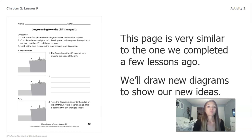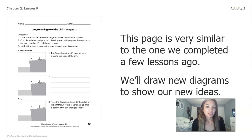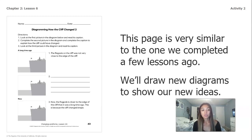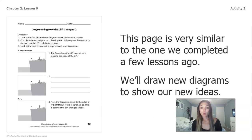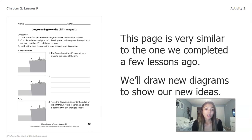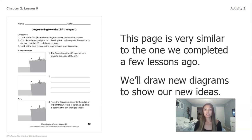The first part of our diagram shows that a long time ago, the flagpole on the cliff was not very close to the edge of the cliff. Then, somewhere in between a long time ago and now, something happened — and you're going to use what you've learned throughout this chapter to think about what changed in the middle. At number three, it says now the flagpole is closer to the edge of the cliff than it was a long time ago, because the cliff changed shape. In those blanks, you're going to think about what caused the cliff to change shape using what you know from our investigations, models, and readings.